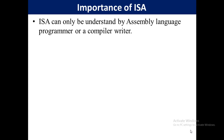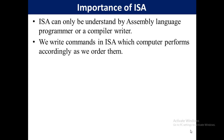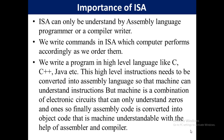ISA can only be understood by an assembly language programmer or a compiler writer. We write commands in ISA which the computer performs accordingly as we order it. We write programs in high-level languages like C, C++, Java, etc. These high-level instructions need to be converted into assembly language so that the machine can understand them and perform operations accordingly.